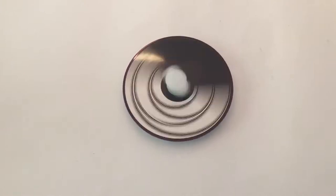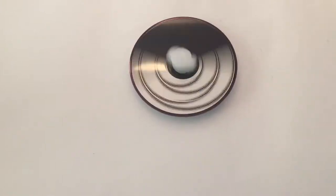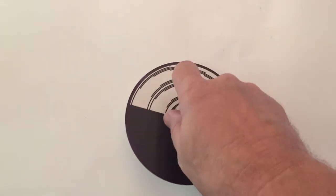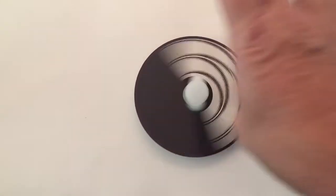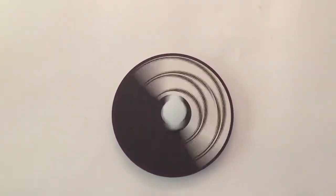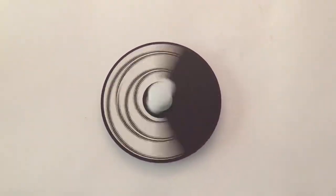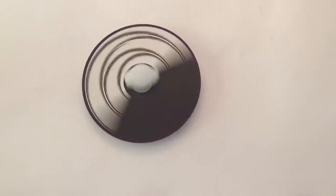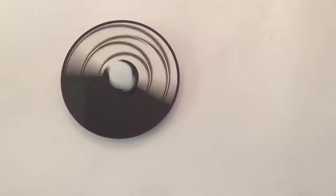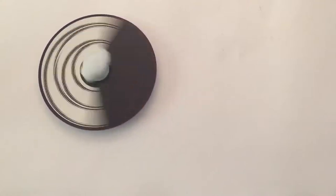So, the science behind this. The wheel is called the Benham's Top, and it creates an illusion of color when black and white patterns are rapidly changed. It is named after the toy maker Charles Benham, who in 1895 created the top painted with this pattern. When you spin the disc and stare at the illusion, you may see arcs of subtle colors. These are called Fechner colors and appear out of nowhere.